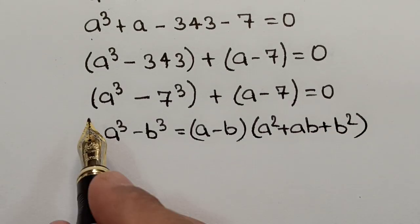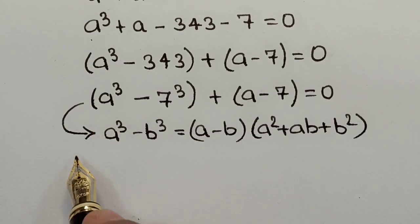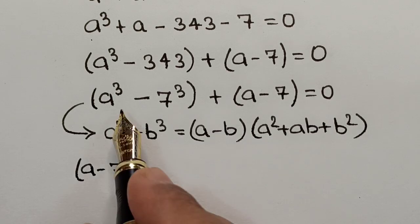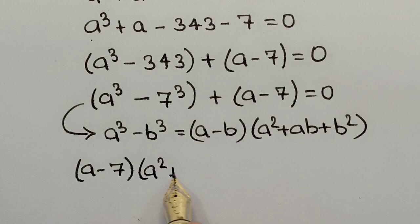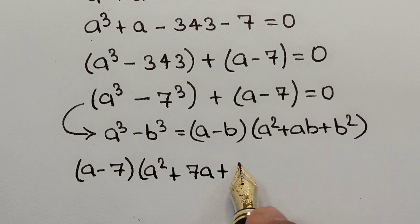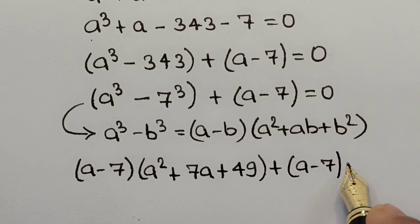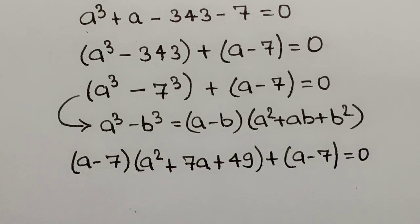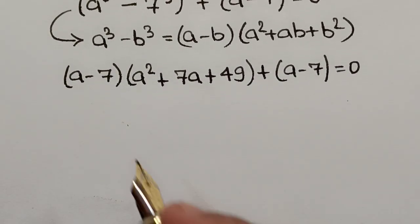Applying this formula, A³ - 7³ expands to (A - 7)(A² + 7A + 49). So our equation becomes (A - 7)(A² + 7A + 49) + (A - 7) = 0. We can now take (A - 7) as a common factor.